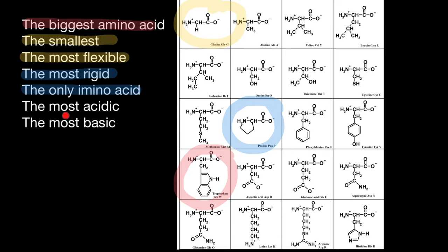Next, we have to identify the most acidic amino acid. Out of all 20 amino acids, only two have the word 'acid' in their name: aspartic acid and glutamic acid. Between these two, aspartic acid is the most acidic amino acid — more acidic than glutamic acid.